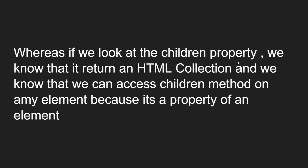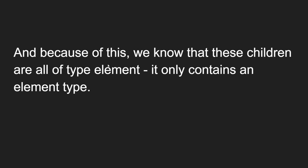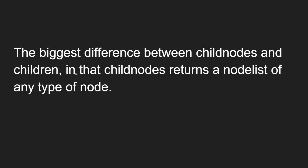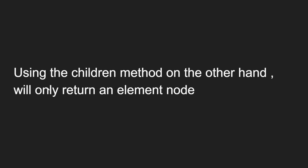Whereas if you look at the children property — when you use the children property, it returns an HTMLCollection. We can access the children property on any element node. The children property, unlike childNodes, returns an HTMLCollection, not a NodeList. We can access the children property only on an element node. Because of this, children only contains element type nodes — it will return all element nodes only. The biggest difference is that childNodes returns a NodeList of any type of node, whereas children returns only element nodes.